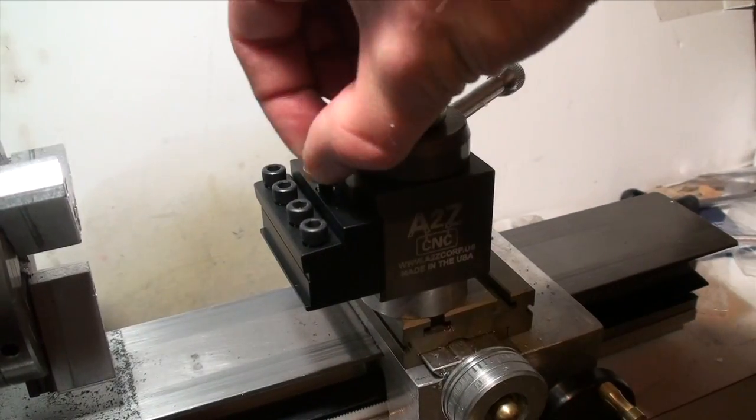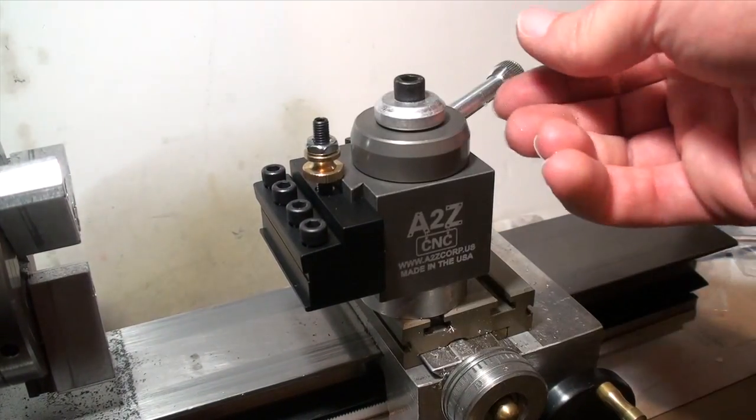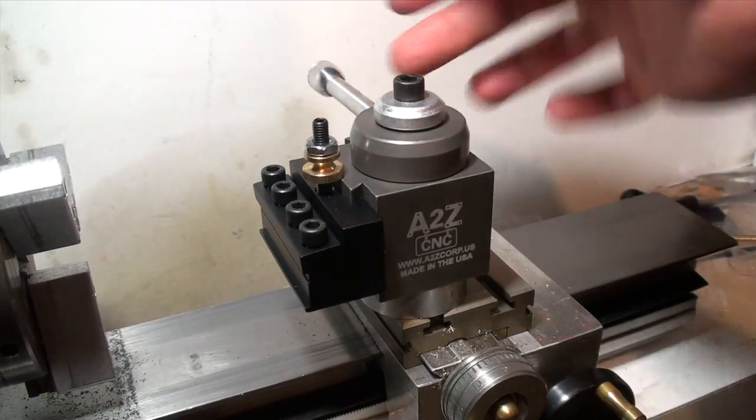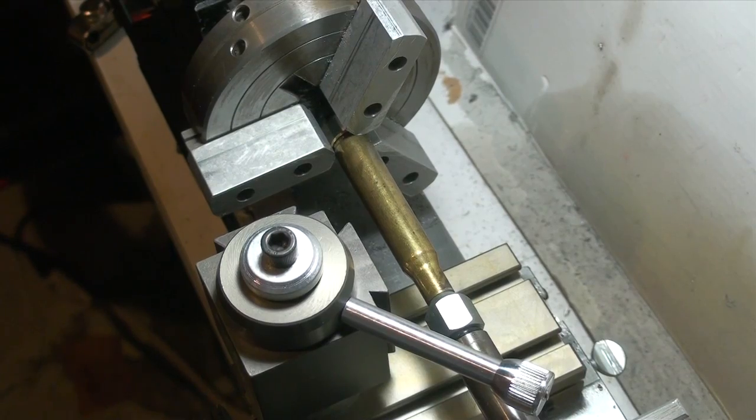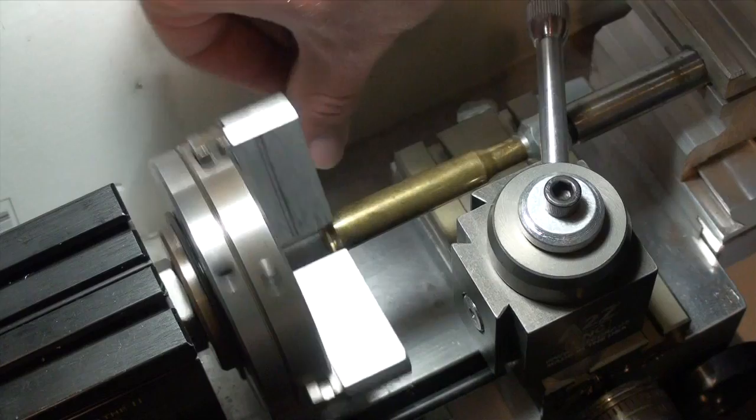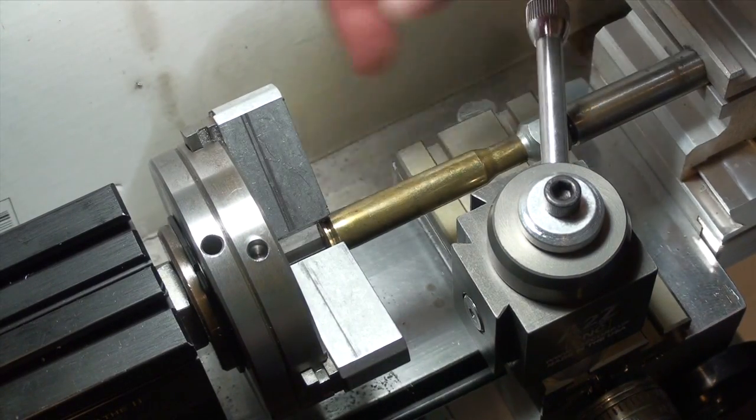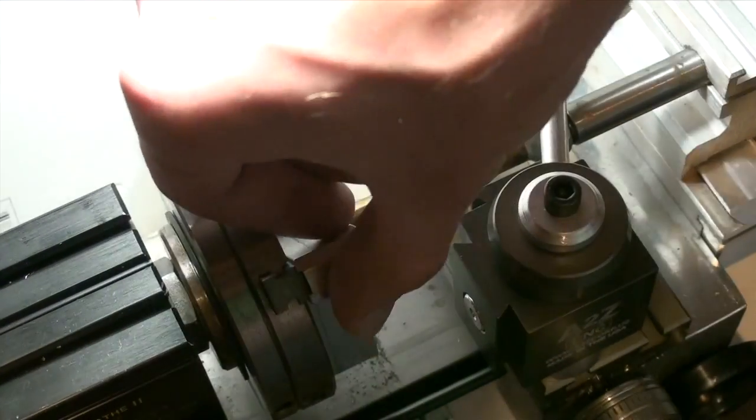And here is where you can adjust your tool height, but you do that actually when it's loose. So I'm sure most of you are anxious to see this tool post in action. What I have here is a rifle cartridge and I need to part off the end for a project I'm doing. I have it supported in the back and it's spinning true.